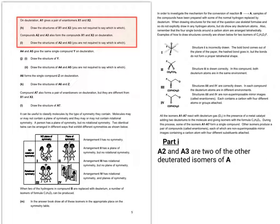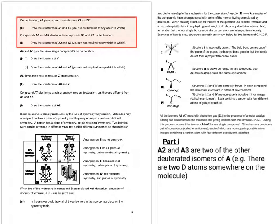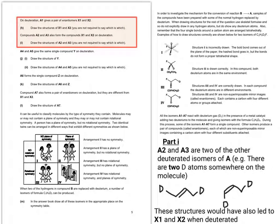So if we're going on to part I, what this means, where it says compounds A2 and A3 also form the compounds X1 and X2 on deuteration. If you remember, A2 and A3 are two of the other deuterated isomers of A. In other words, there are two deuterium atoms somewhere on the molecule. So the idea here is that you are to work out what other possible structures might have led to X1 and X2 when deuterated. So you're thinking backwards. So what you want is something that would have led to those two structures that we talked about a moment ago, but with the second deuterium placed somewhere else. So having a little think about it, the only two possible candidates for A2 and A3 would be these two here.